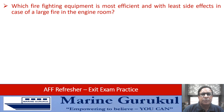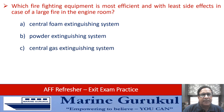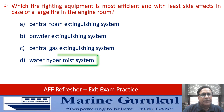Which firefighting equipment is most efficient with least side effects in case of a large fire in the engine room — central foam extinguishing system, powder extinguishing system, central gas extinguishing system, or the water hypermist system? The most efficient with least side effect is the water hypermist system because of its cooling effect and conversion to vapors. The hypermist system is the most efficient for the engine room.